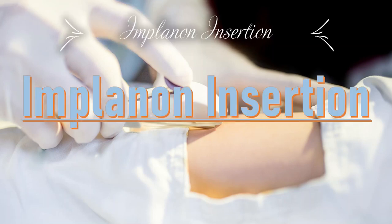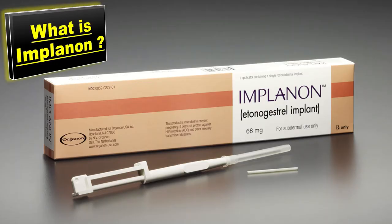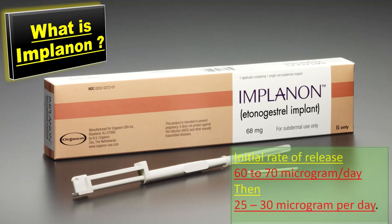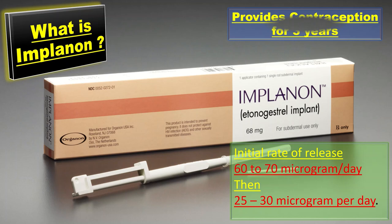The insertion of Implanon is the topic of our discussion today. Implanon is a subdermal long-acting reversible hormonal contraceptive method containing etonogestrel of about 68 milligrams. The initial release of progesterone from Implanon is 60 to 70 micrograms per day, and it falls gradually to 25 to 30 micrograms per day. Implanon provides contraception for about three years, and the failure rate is 0.05 percent.